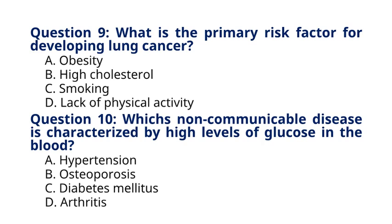Question 10: Which non-communicable disease is characterized by high levels of glucose in the blood? A. Hypertension, B. Osteoporosis, C. Diabetes mellitus, D. Arthritis. The correct answer is option C, Diabetes mellitus. Explanation: Diabetes mellitus is a chronic metabolic disorder characterized by elevated blood sugar levels due to either insufficient insulin production or the body's inability to use insulin effectively.